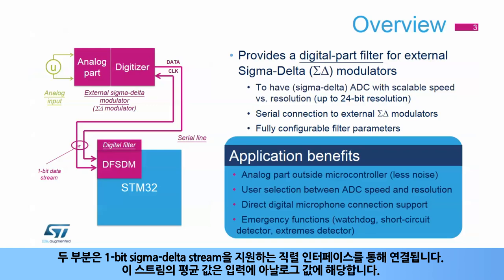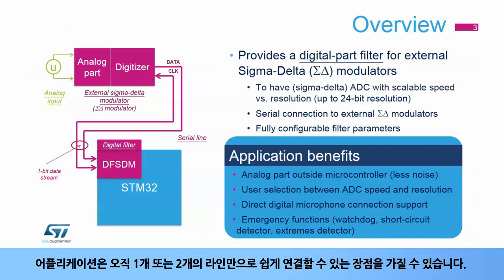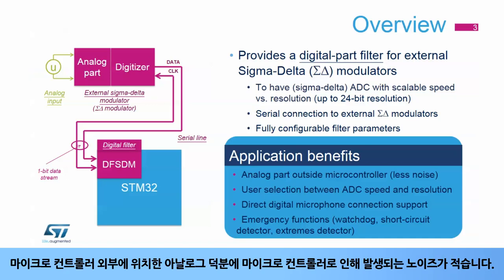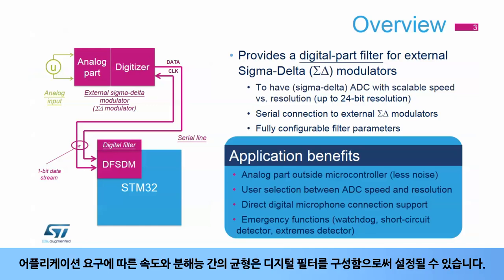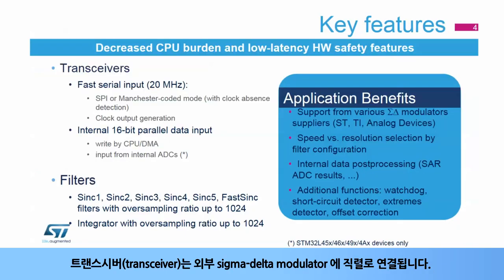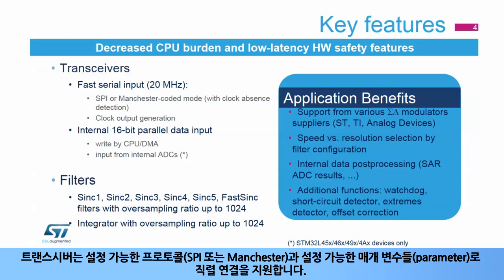The average value of this stream represents the analog value on input. Applications can benefit from easy connection — just one or two wires are needed. Thanks to the analog being located outside the microcontroller, there is less noise. The balance between speed and resolution according to application needs can be set by configuring the digital filter. Transceivers provide the serial connection to the external sigma-delta modulator. They support serial connections with configurable protocols — SPI or Manchester — and configurable parameters.